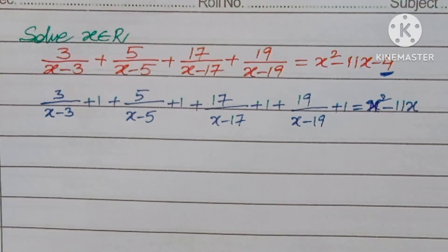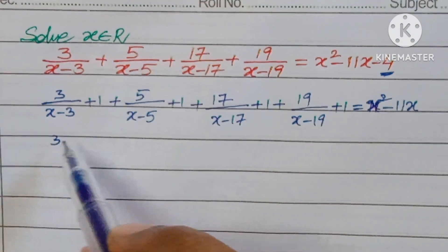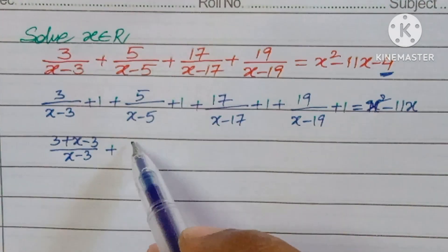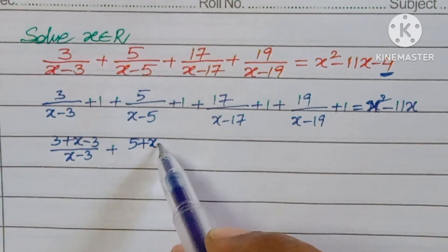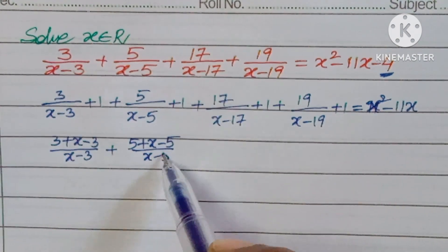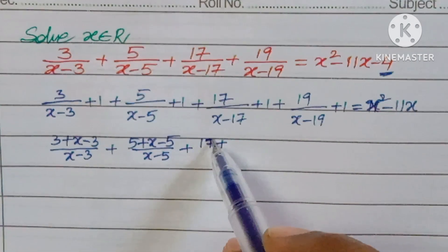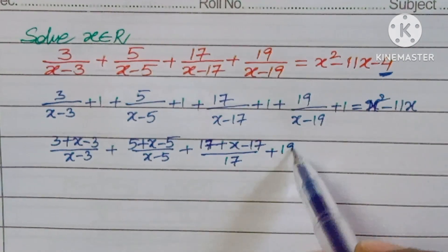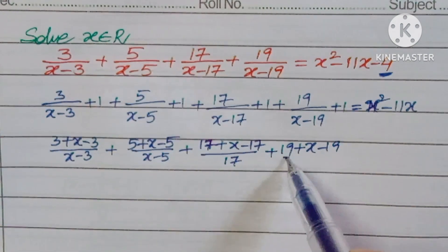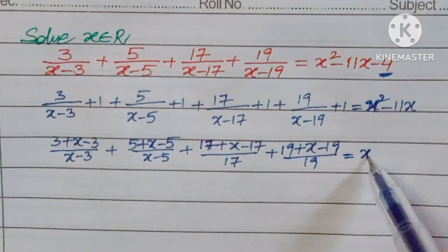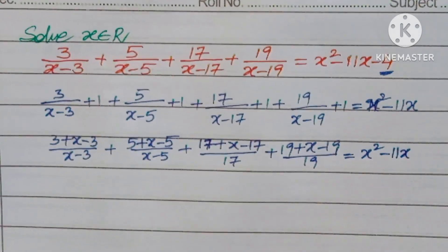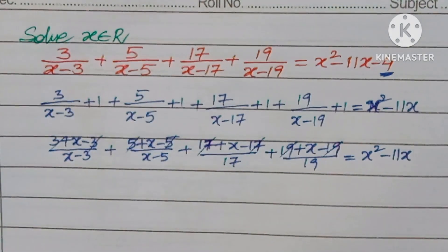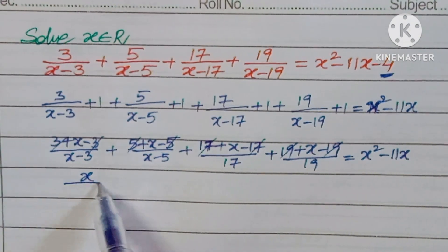The logic behind this is: taking the LCM gives us (3 plus x minus 3) over (x minus 3) plus (5 plus x minus 5) over (x minus 5) plus (17 plus x minus 17) over (x minus 17) plus (19 plus x minus 19) over (x minus 19). The constants 3, 5, 17, and 19 cancel, leaving x over (x minus 3) plus x over (x minus 5) plus x over (x minus 17) plus x over (x minus 19).